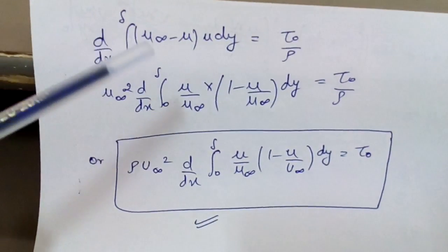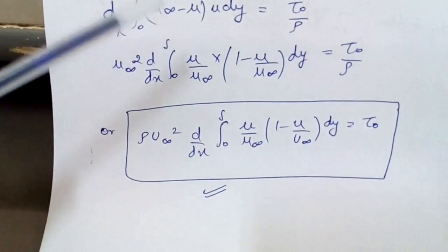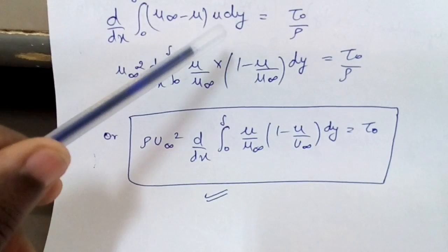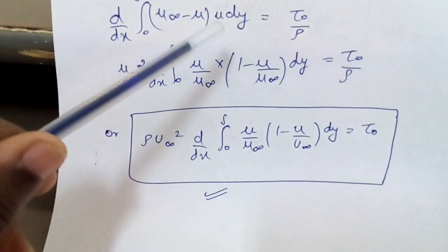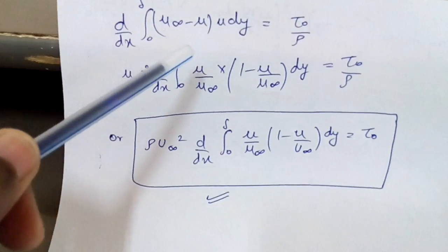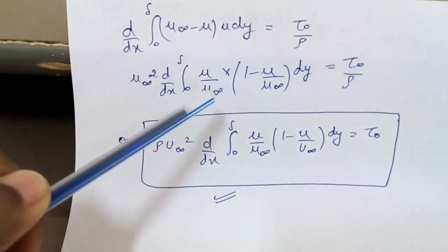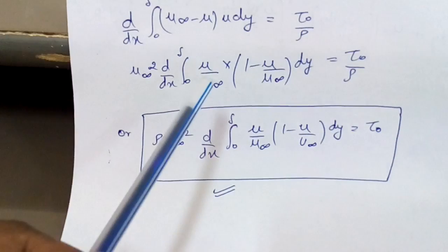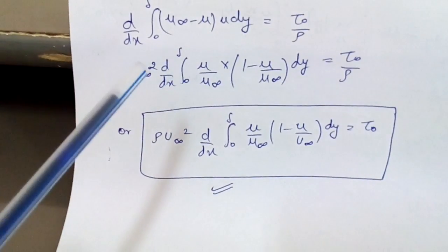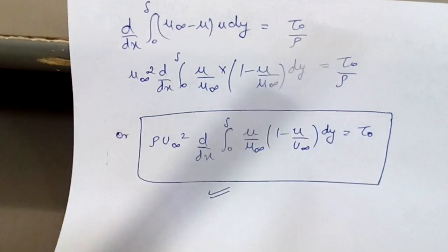So we have: d by dx of integral from 0 to delta of (u∞ minus u) times u dy equals tau by rho. Now taking u∞ common from the first bracket, and multiplying and dividing by u∞ for the u term, the integrand becomes u∞² times (u/u∞)(1 minus u/u∞).